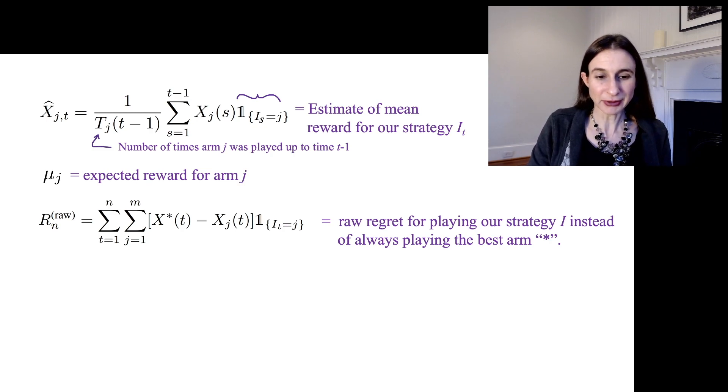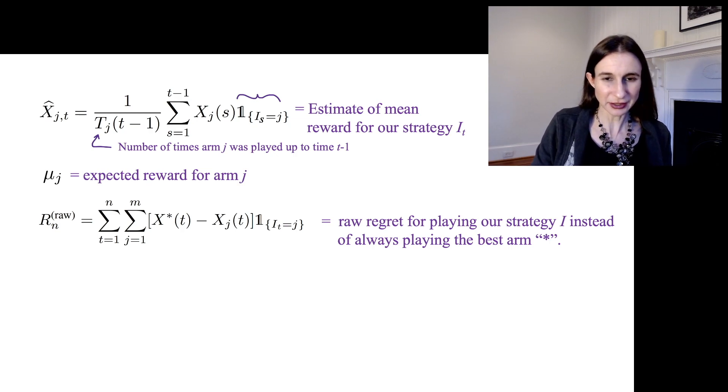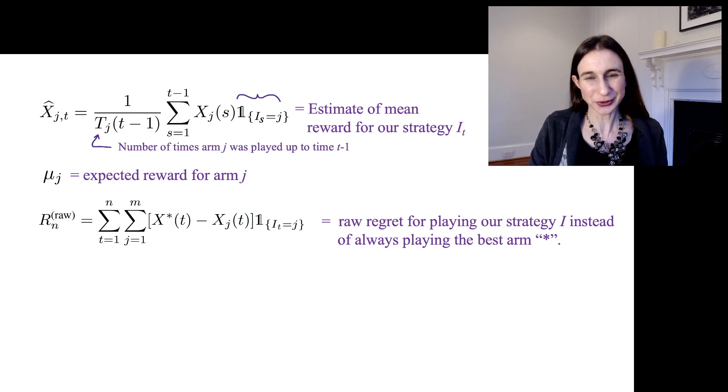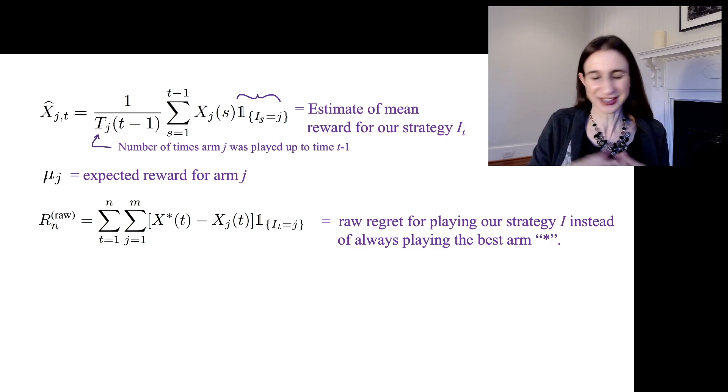So R^raw, this is the raw regret for playing our strategy instead of always playing the best arm, which is called star. We look at the reward we got for arm j and then we compare it to what we would have got had we known which arm was the best. The theory actually doesn't use the raw regret.